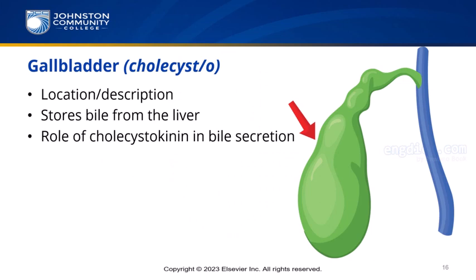The gallbladder — combining form cholecysto — is a small sac on the underside of the right lobe of the liver. It stores bile until needed in digestion. When fatty food enters the duodenum, cholecystokinin is secreted, causing the gallbladder to contract and release bile into the cystic duct. Note that -kinin is a suffix for a substance that moves, making cholecystokinin a substance that moves the gallbladder. From the cystic duct, bile travels to the common bile duct and then to the duodenum.